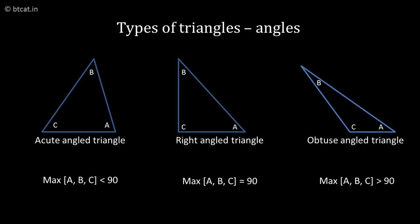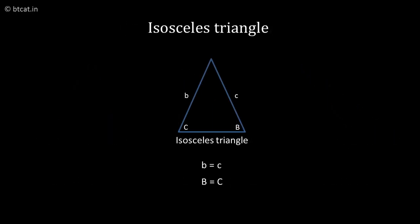So these are the main basic building blocks of triangle. Then of course, we can have one more property: if two sides of the triangle are equal, then the opposite angles are equal. So if b equals c (small b equals small c), then capital B equals capital C. Now the beauty of this rule is that it is applicable for greater and lesser as well.